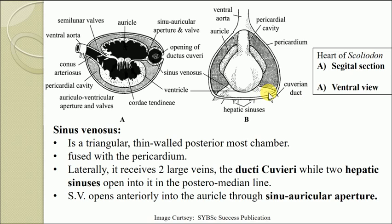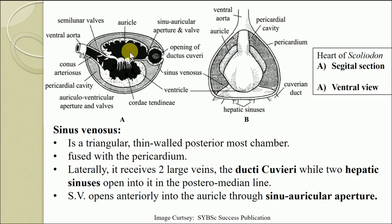In addition to the cuvarian ducts, the sinus venosus also receives blood from two small sinuses coming from the liver, referred to as hepatic sinuses, which open into it in the posterior midline. The sinus venosus opens anteriorly into the atrium, also called the auricle. In the sagittal section, you can see the S-shaped tube with the sinus venosus at the posterior end opening into the auricle.